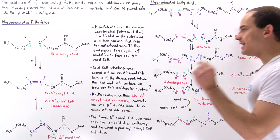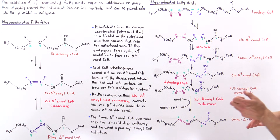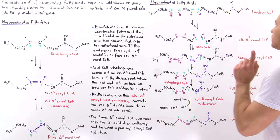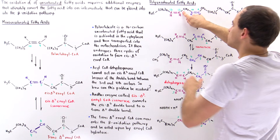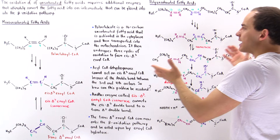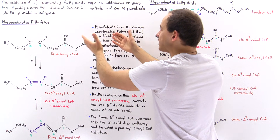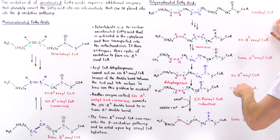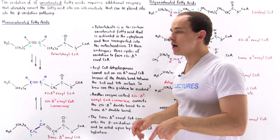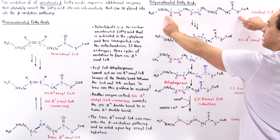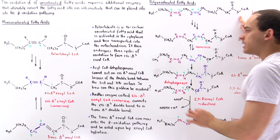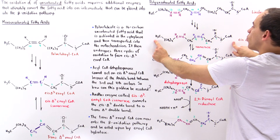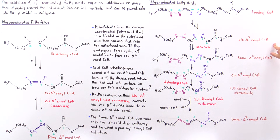Now, what about the case when we have an even number of double bonds in a fatty acid? To demonstrate what our cells do, let's discuss linoleate. Linoleate is an 18-carbon fatty acid that contains two double bonds: one between carbon 9 and 10, and another between carbon 12 and carbon 13. Just as with palmitoleate, we activate the linoleate in the cytoplasm, move it into the matrix of the mitochondrion, and then undergo three cycles of beta-oxidation to release three acetyl-coenzyme A molecules, shortening this 18-carbon molecule to a 12-carbon cis-delta-3-enoyl-coenzyme A.